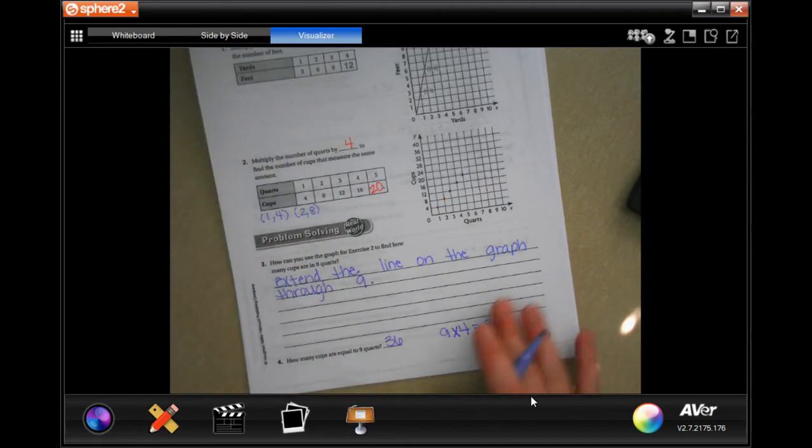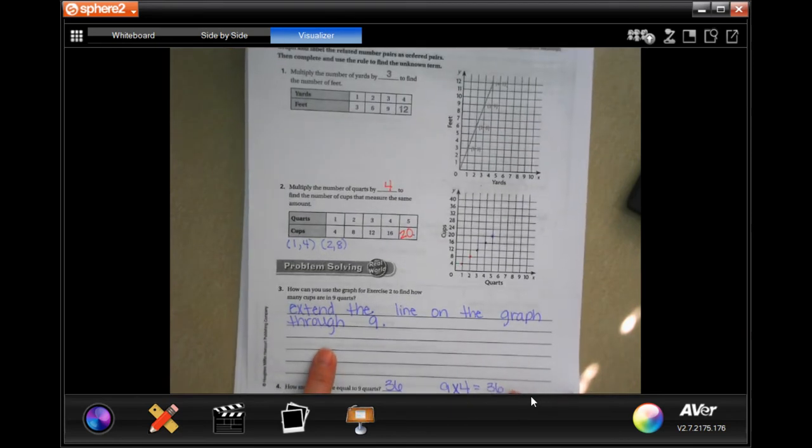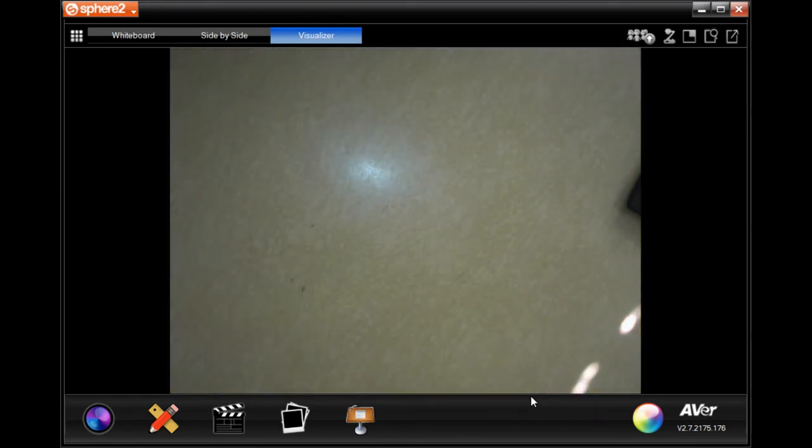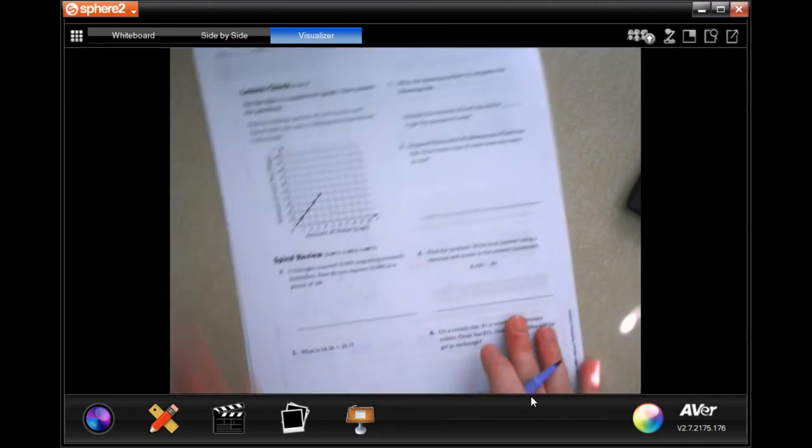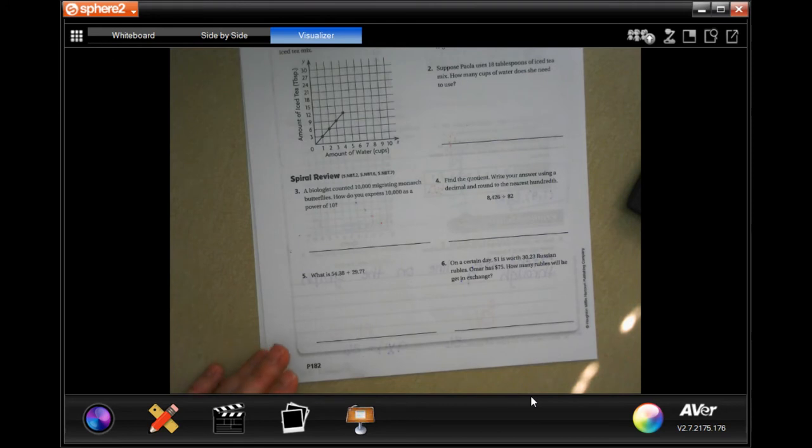Alright, so we're going to go to the back now. That's all you have to write on that line - that's enough to make sense for your teachers. We're going to the back where you're going to do the lesson check and the spiral review.